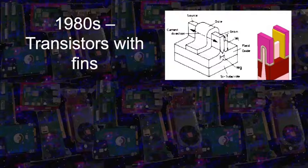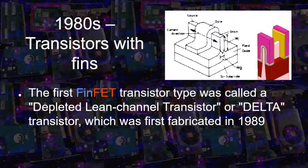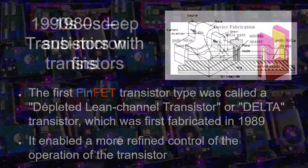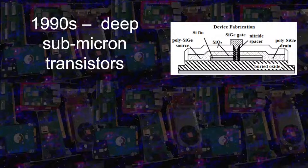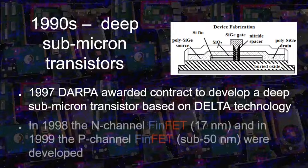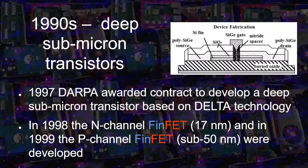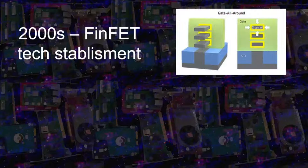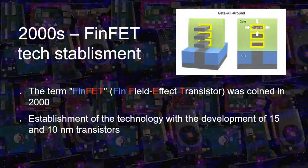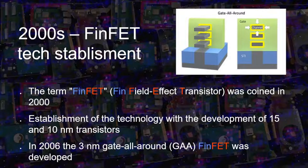In the 80s, the first FinFET-type transistor was invented, but at the time it was called delta. A more refined control of the transistor operation was observed. In the 90s, new transistors of the same type started to be studied and developed at deep submicron sizes, below 100 nanometers. In 1998, an N-type transistor with 17 nanometers was developed, and in the following year, a P-type smaller than 50 nanometers. The term FinFET was defined only in the early 2000s, with transistors becoming increasingly smaller, reaching 3 nanometers in 2006 with the gate all-around type.